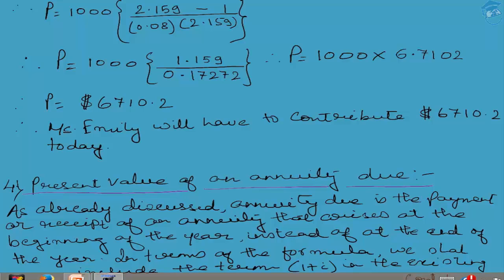Now we shall try to understand the use of the present value calculation in the case of an annuity due. Till now we have been talking about the present value of an annuity. Now we shall be talking about calculating the present value of an annuity due. Regarding annuity due, we all know that annuity due refers to those annuity streams which take place at the beginning of the year — rather than taking place at the end of the year.